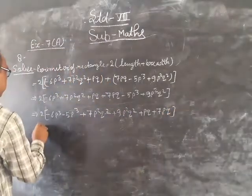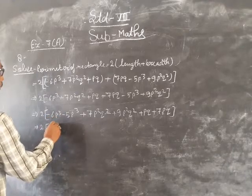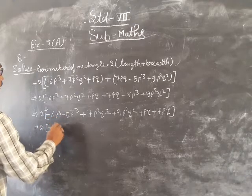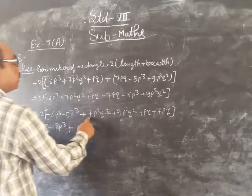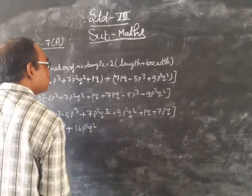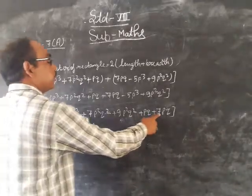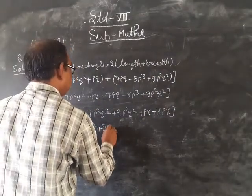Now we add minus 6 minus 5, that is minus 11p³, plus 7 plus 9 is 16p²q², plus 1pq plus 7pq.